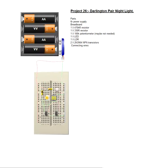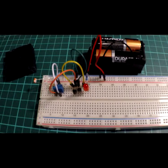That's it for Project 26, thank you for watching. Hi, this is Project 26, Darlington Pair Nightlight. A pretty straightforward circuit.